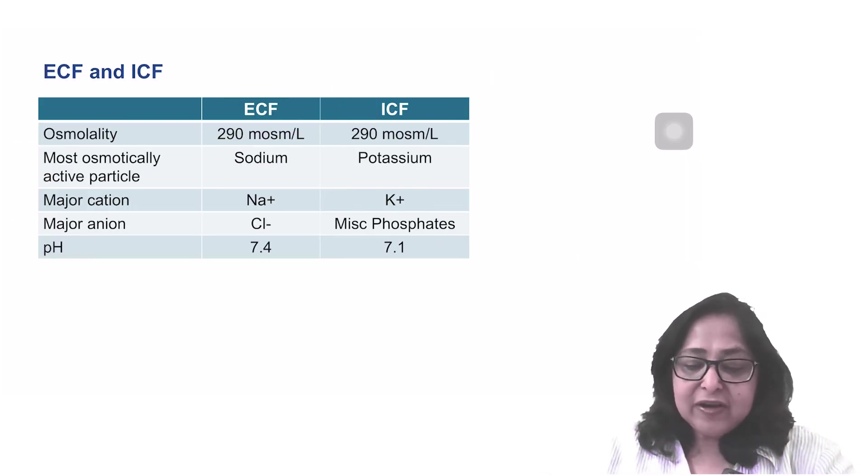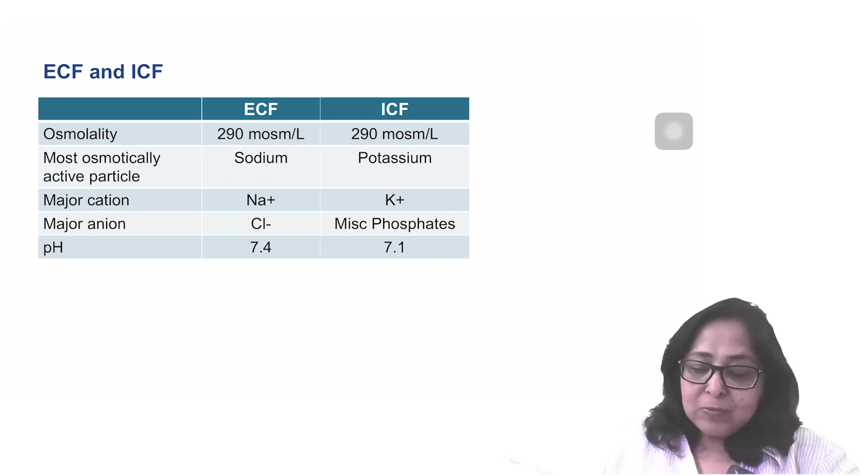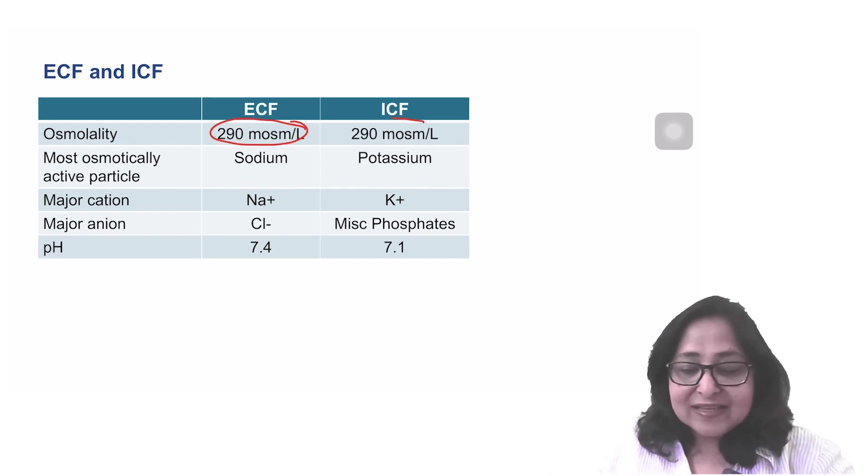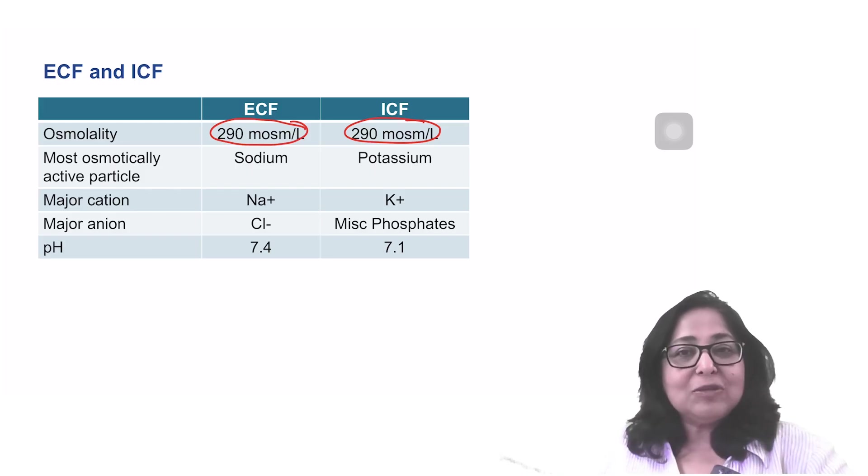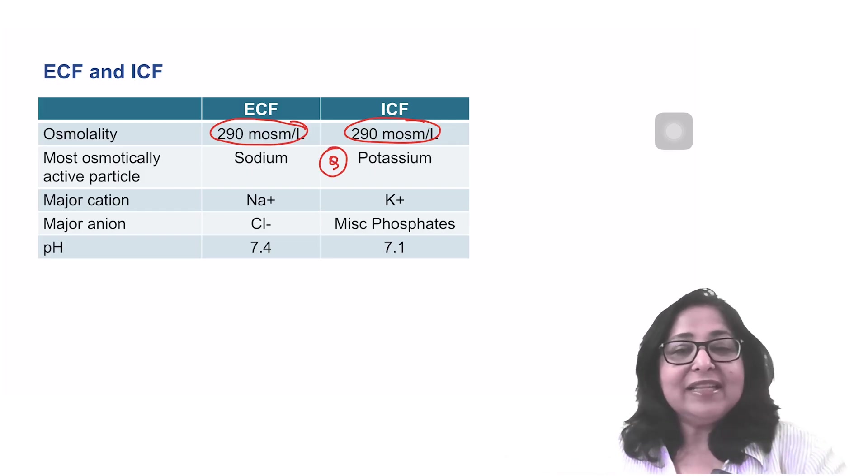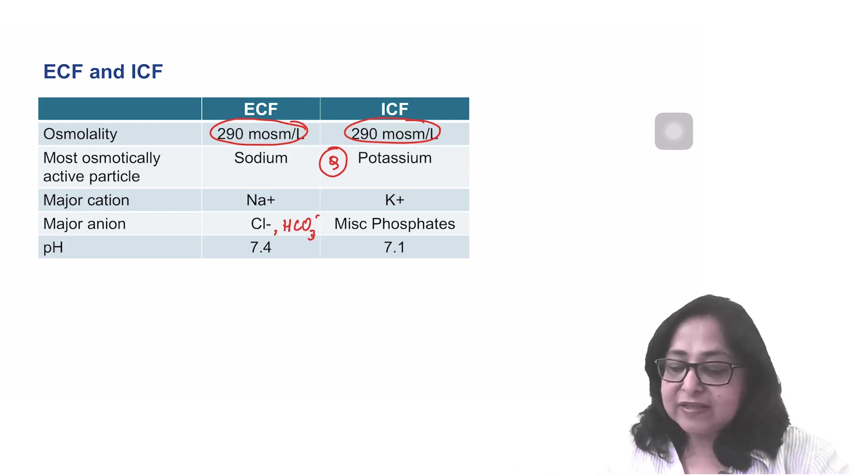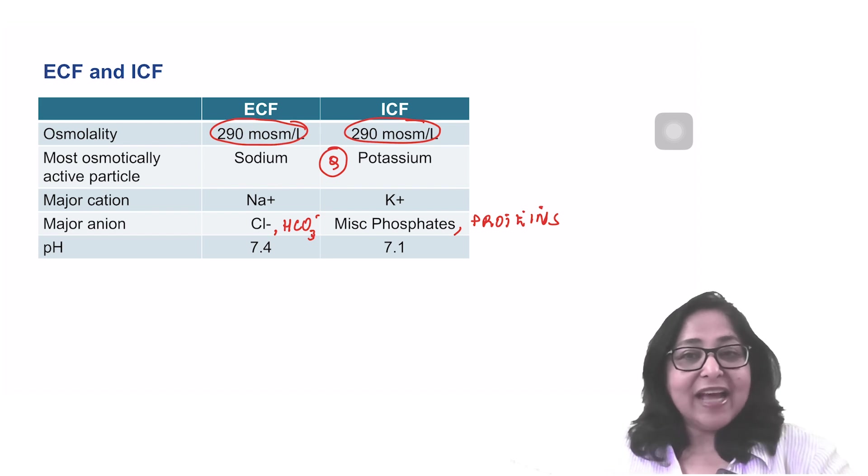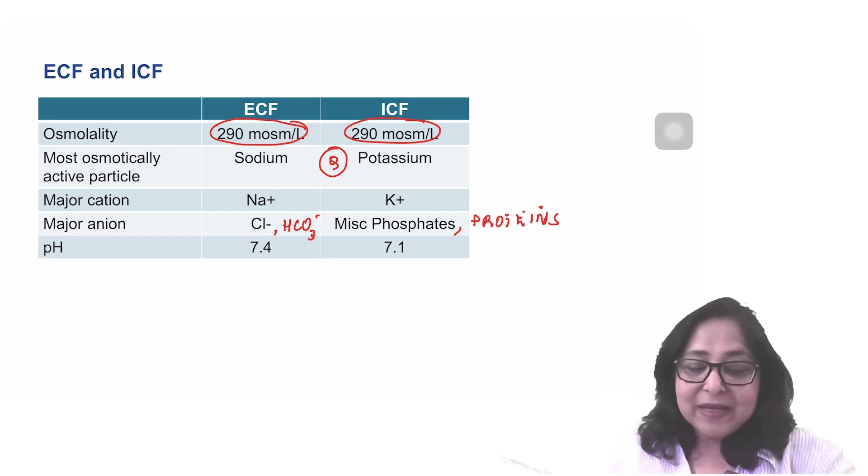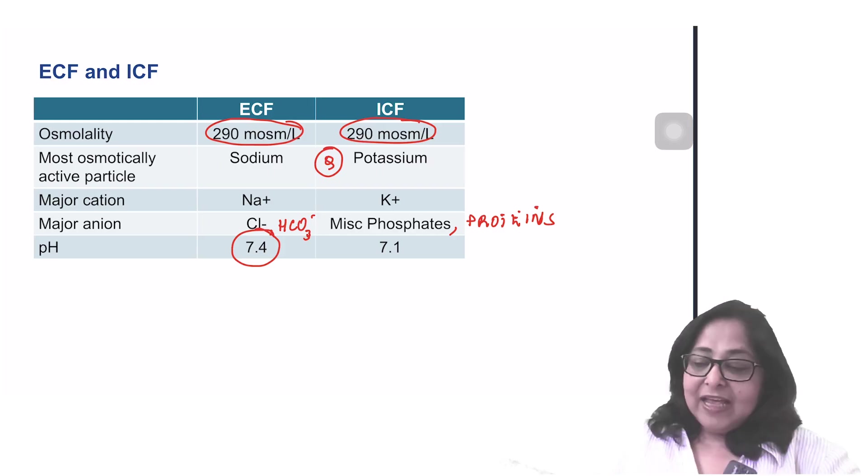Let's have a look at this very important table. What is the difference between ECF and ICF? Questions have come from here. Osmolality of both ECF and ICF is the same, but the most osmotically active particle in the ECF is sodium, in the ICF is potassium. The major cation in the ECF is sodium, in the ICF potassium. Major anion in the ECF is chloride and bicarbonate, whereas in the case of ICF it is miscellaneous phosphates and proteins. A difference between the ECF and the ICF is in the pH: higher pH in the ECF at 7.4 and 7.1 in the ICF.